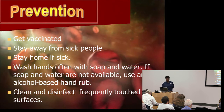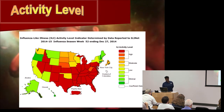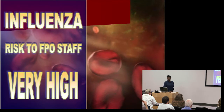How to prevent the flu: get vaccinated, stay home if you're sick, stay away from sick people, wash your hands often with soap and water, and if soap and water are not available, use alcohol-based hand rubs. Clean and disinfect frequently touched surfaces. Texas shows very high flu activity. The risk to FPO is very high for catching the flu.